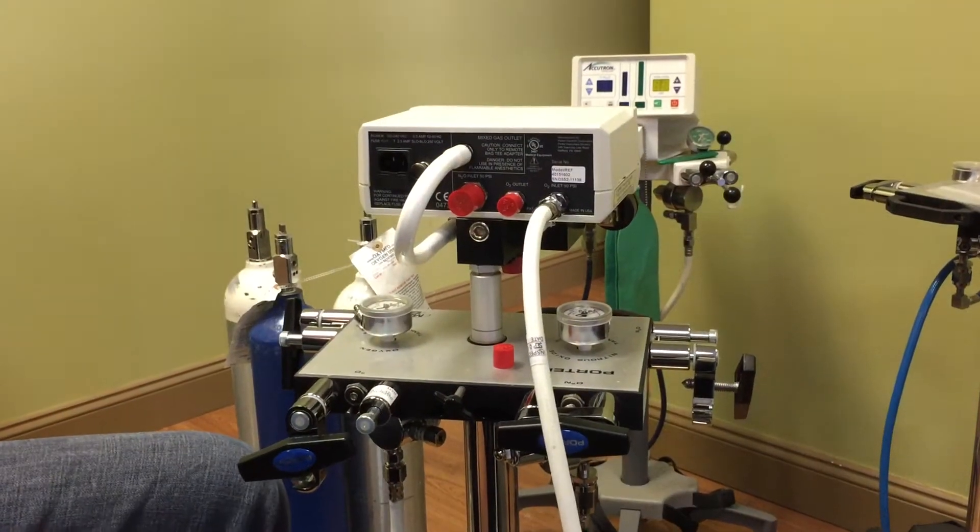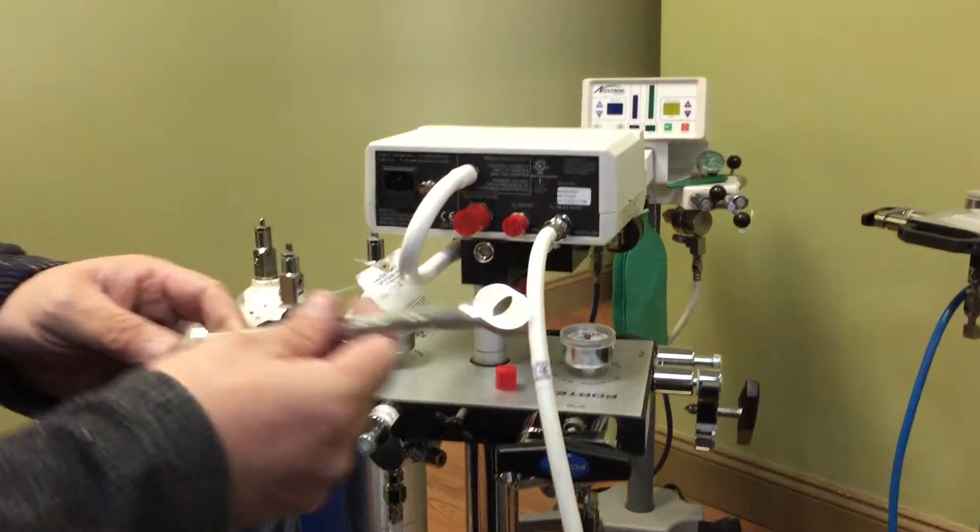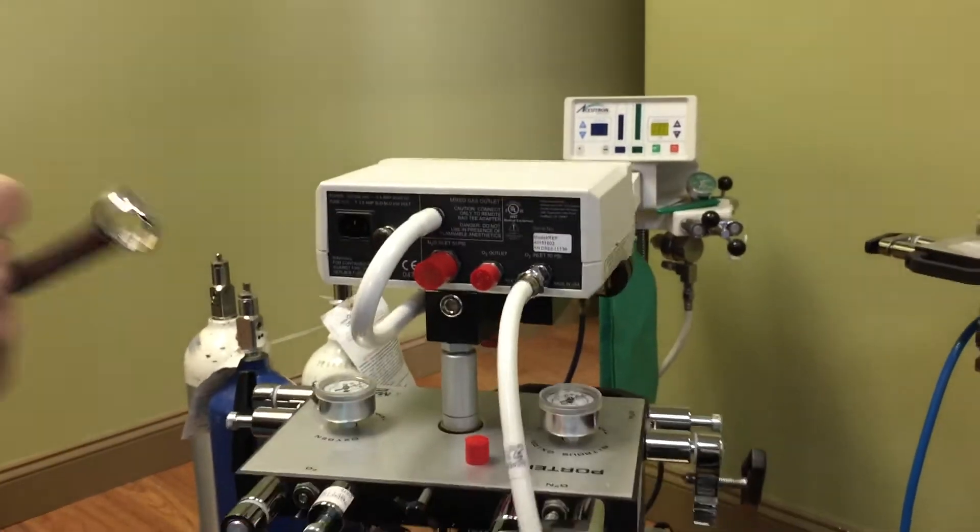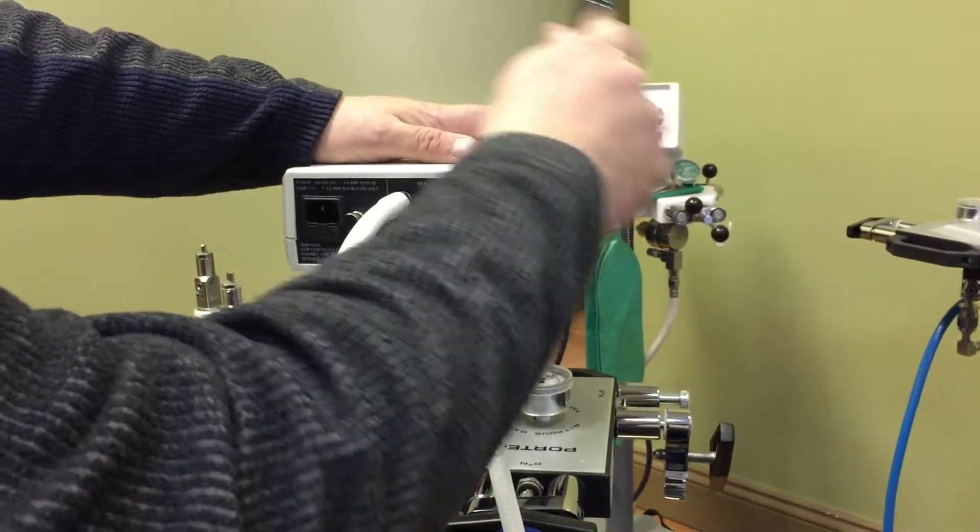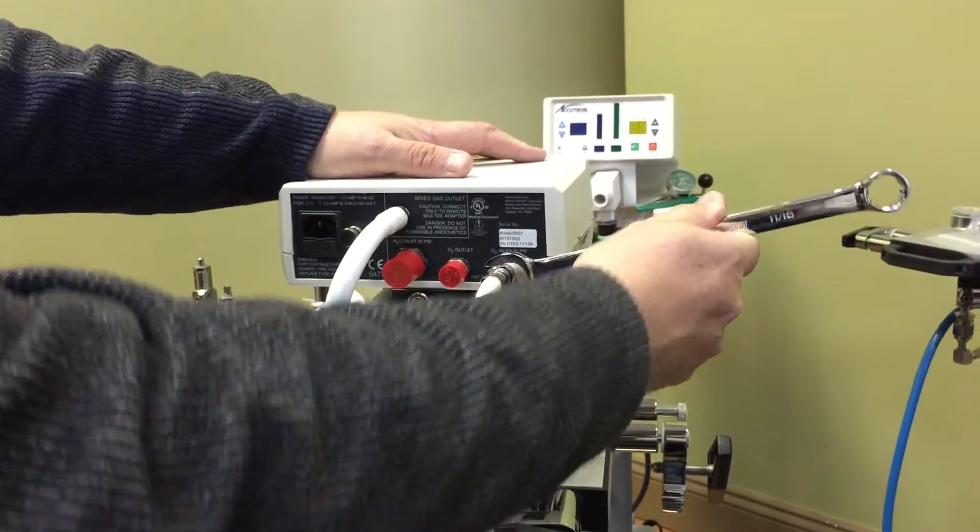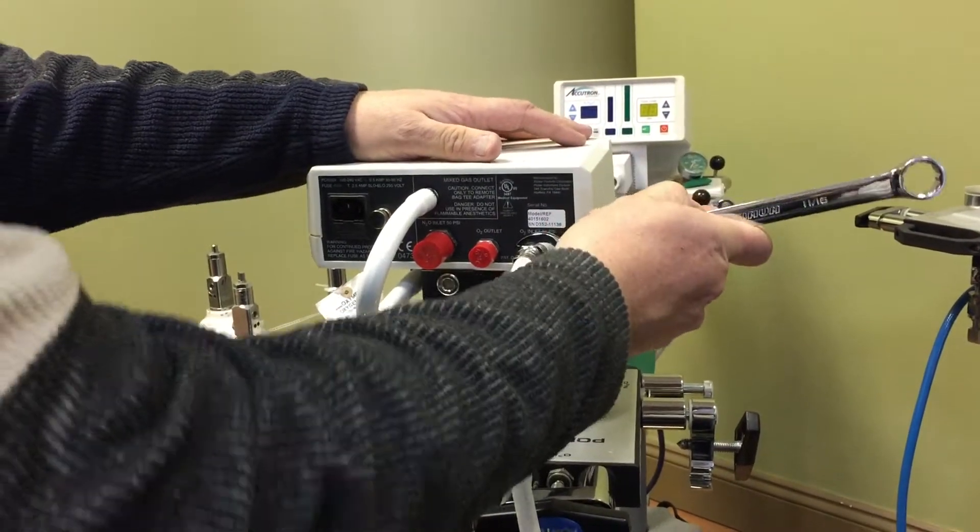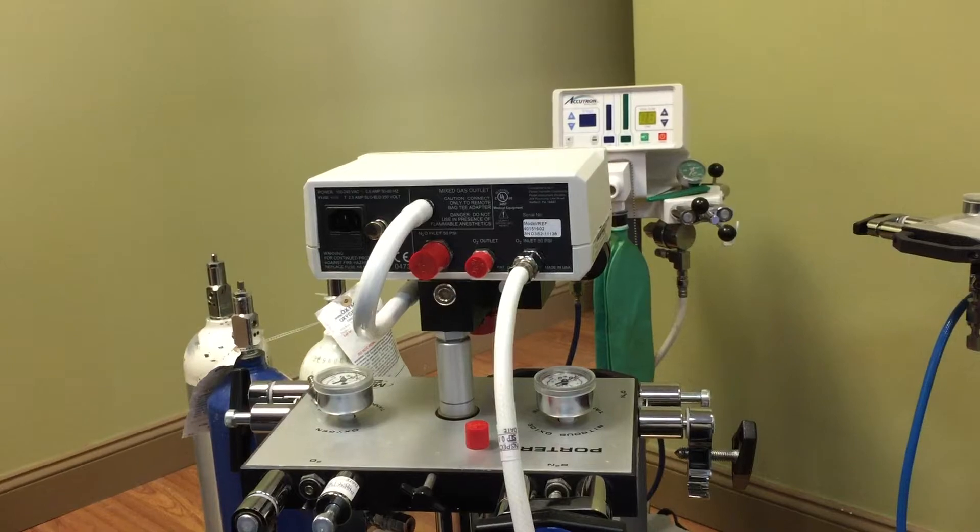Once that's screwed on, an eleven sixteenths key would snug that up. Don't over tighten. You don't need to. It seals with just a light snug. These are connections that are specially made for that.